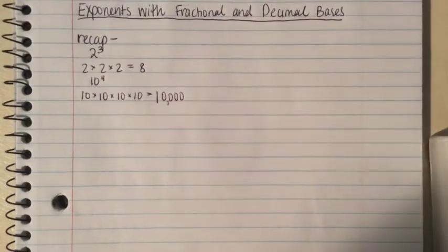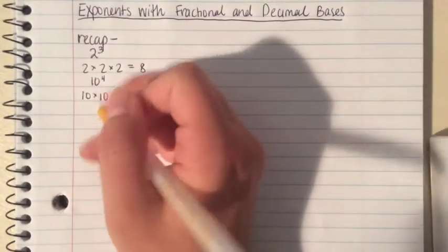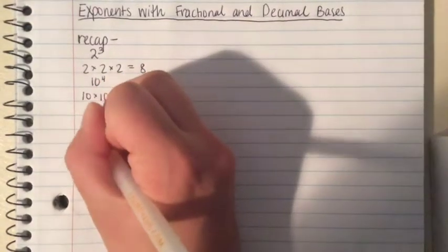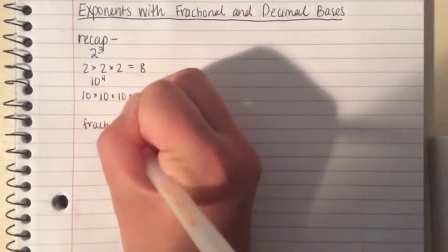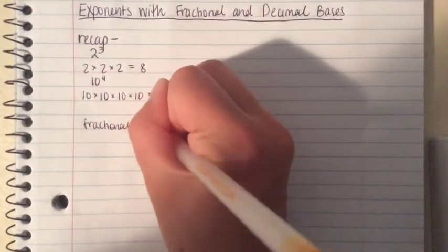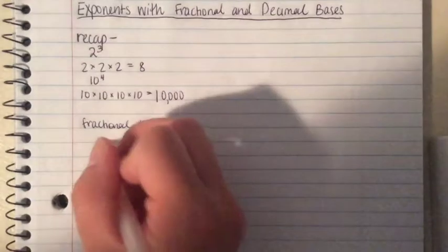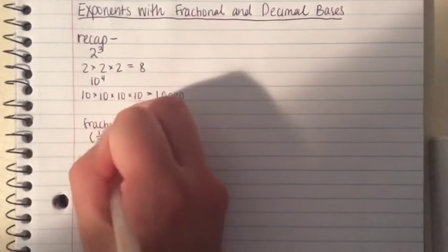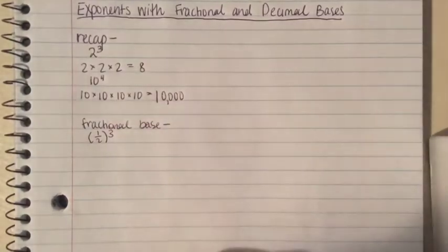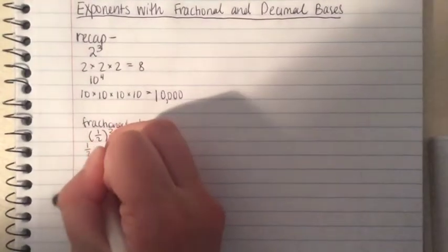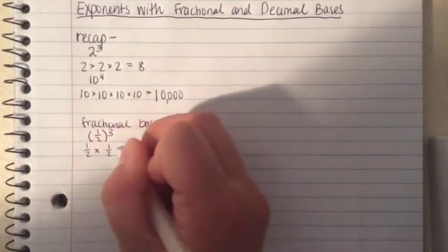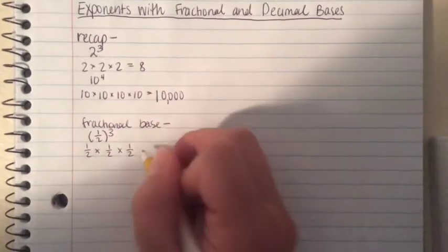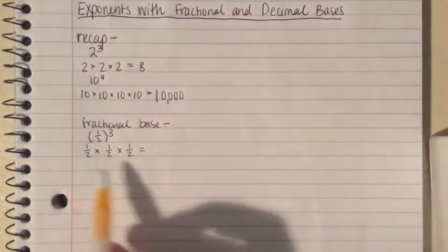base to an exponent. The first example I want to do is, instead of 2 to the third, one-half to the third. So it's the same idea: one-half times one-half times one-half, and you would do this